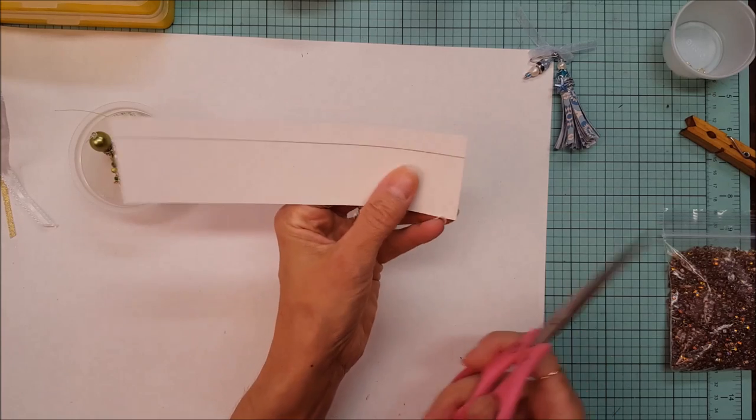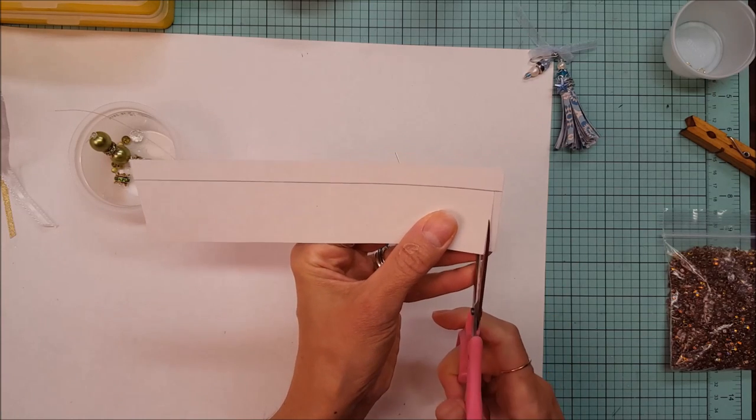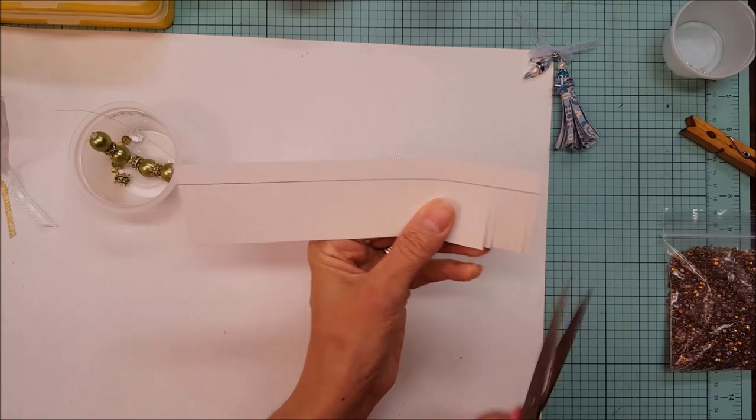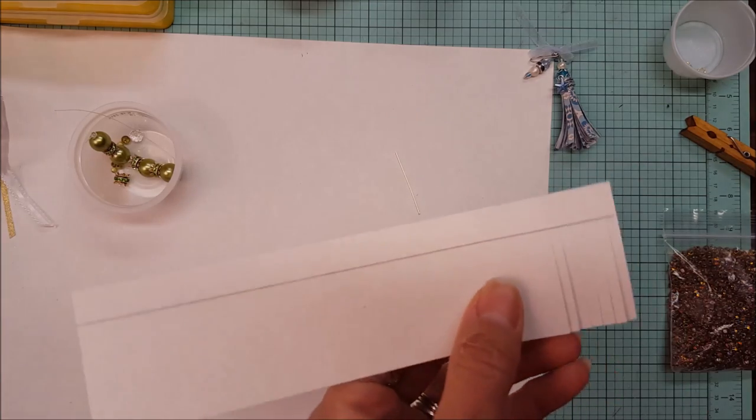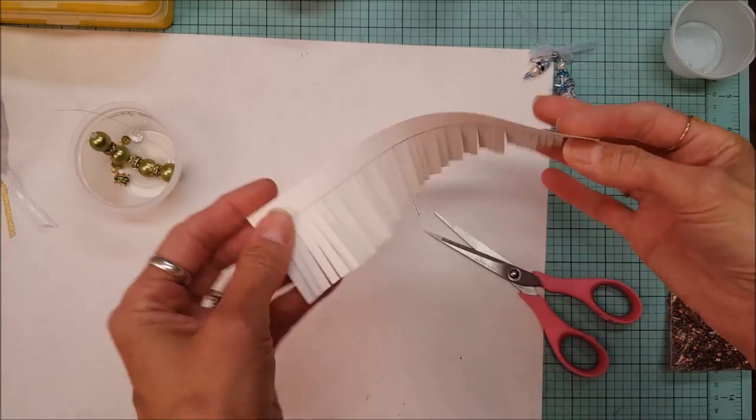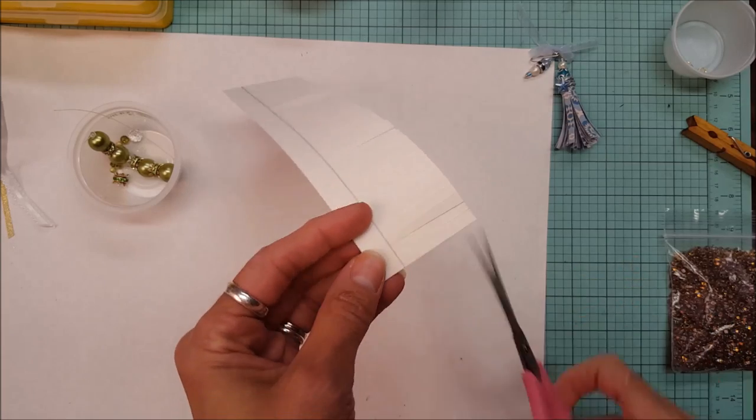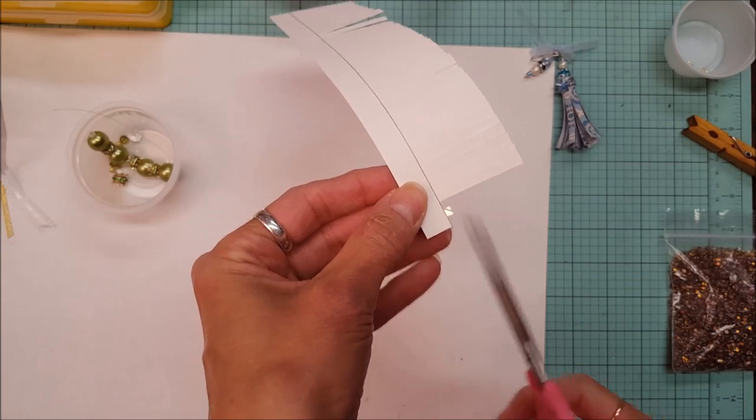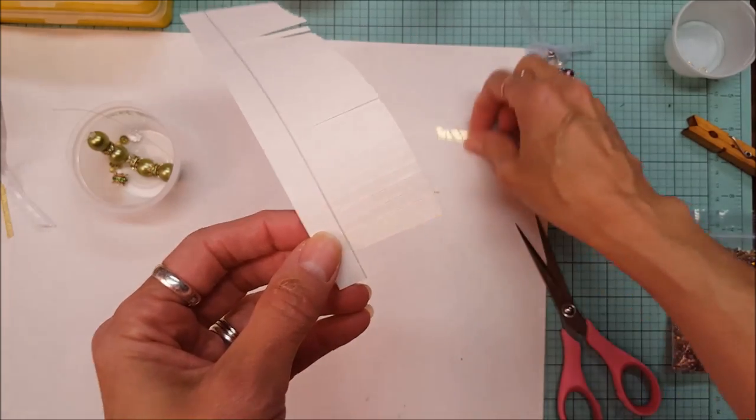And then I'm just going to make cuts fairly close together. They're probably about an eighth of an inch. And I'm going to do that all the way to the very end, all the way here. I'll pause the tape until I get it done. Okay, so I have this completely done. You see that? What I want to do is to cut off one or two of the very end ones here. That's what I'm doing different in my project.